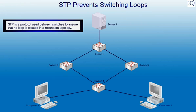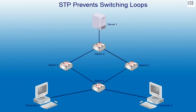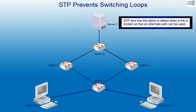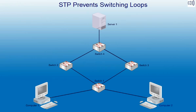STP is a protocol used between switches to ensure that no loop is created in a redundant topology. STP also has the ability to detect when a link is broken, so that an alternate path can be used.